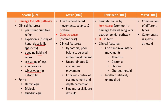Scissoring of the legs occurs when there is spasticity of the extensor or adductor muscles of the lower limb, causing the scissoring. Equinovarus is a deformity of the foot where the foot is in plantar flexion and inversion. The windswept hip deformity involves ipsilateral internal rotation and adduction of the hip joint, with external rotation and abduction of the contralateral hip joint.